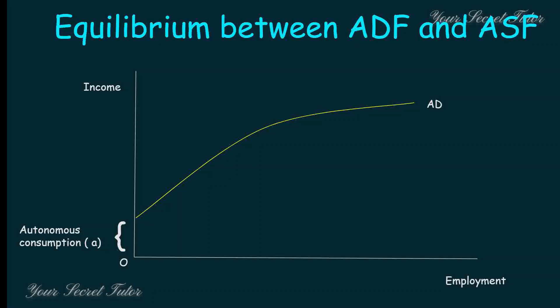The Aggregate Supply curve, on the other hand, starts from the origin. The name of this diagram is called ASAD. The two curves intersect, and the intersection point is called the equilibrium point, also known as the effective demand point.